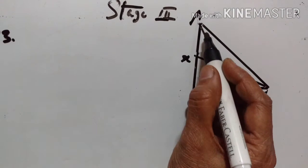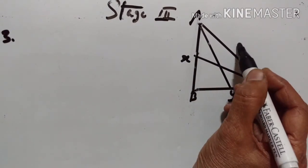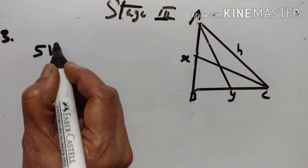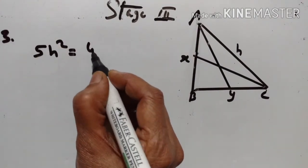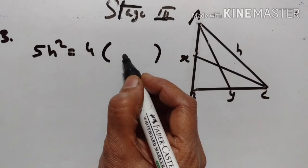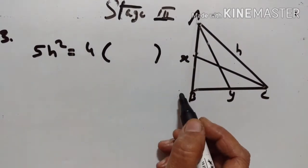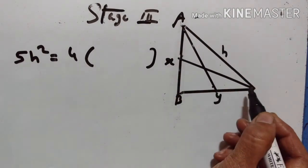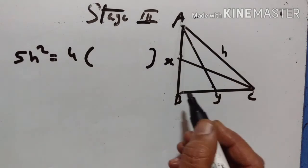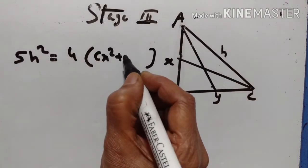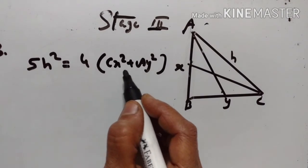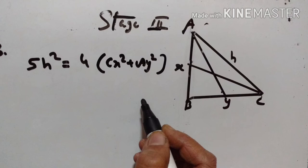Problem number 73. In a right-angled triangle, 5 times the square on the hypotenuse — suppose AC is the hypotenuse — is equal to 4 times the sum of the squares on the medians drawn from the acute angles. Let CX be the median drawn from acute angle C, and AY be the median drawn from acute angle A.